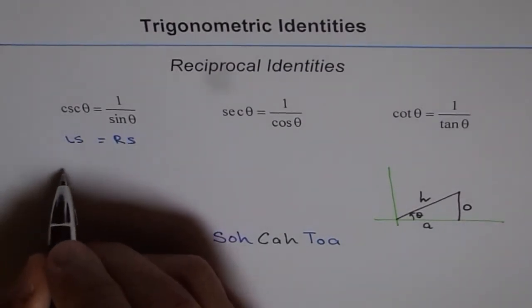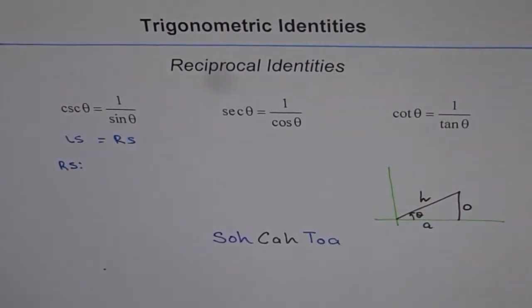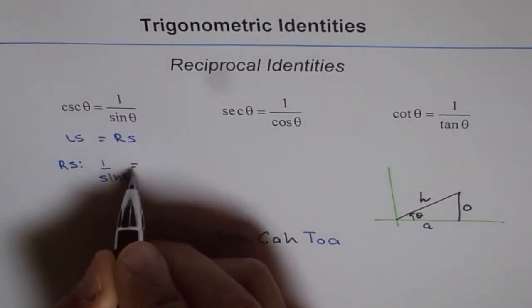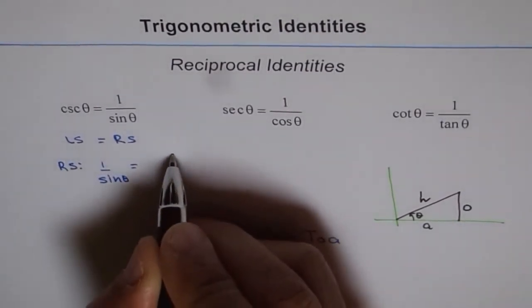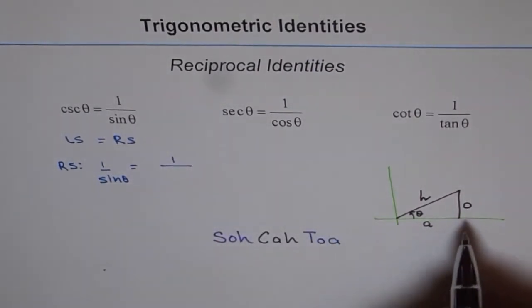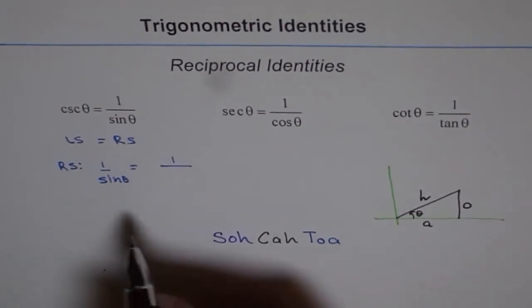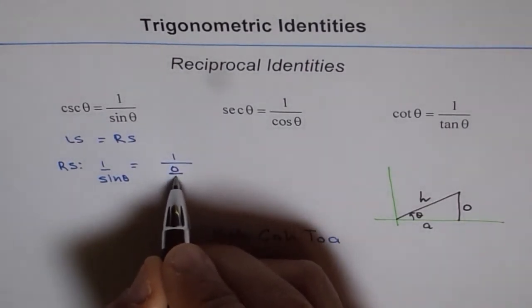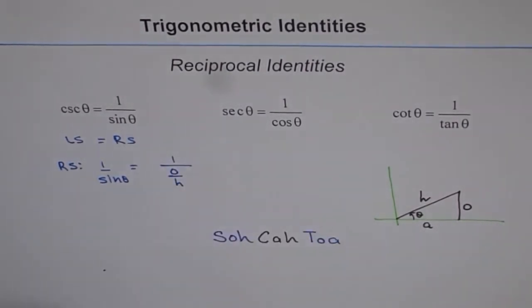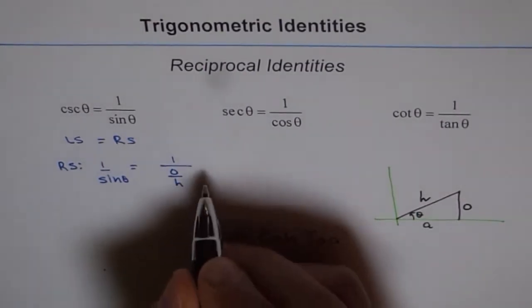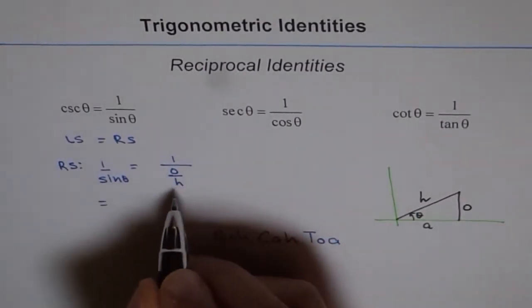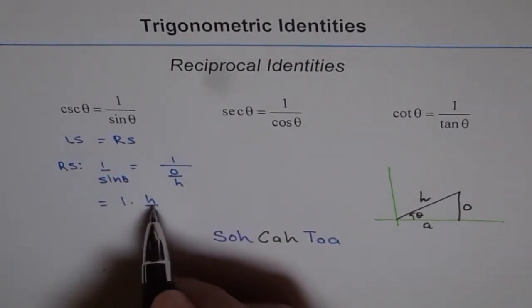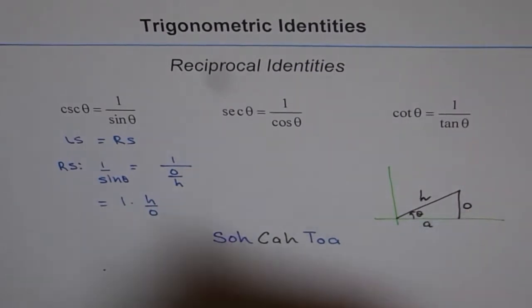The right-hand side of this equation is 1 over sine theta. From our triangle, sine theta is opposite over hypotenuse, so O over H. Then 1 divided by O over H can be written as 1 times H over O.